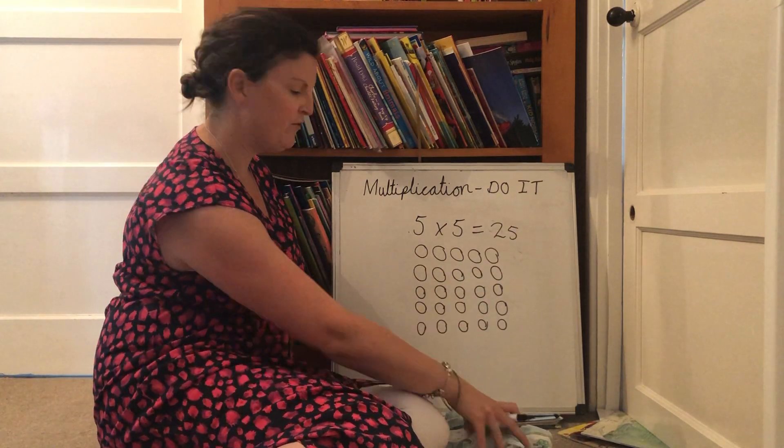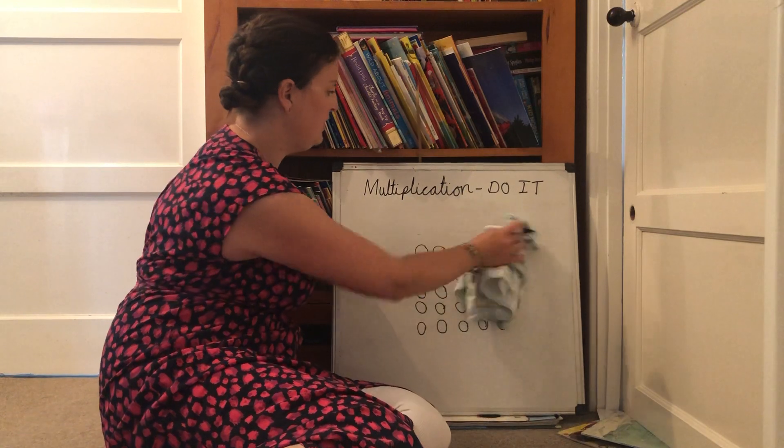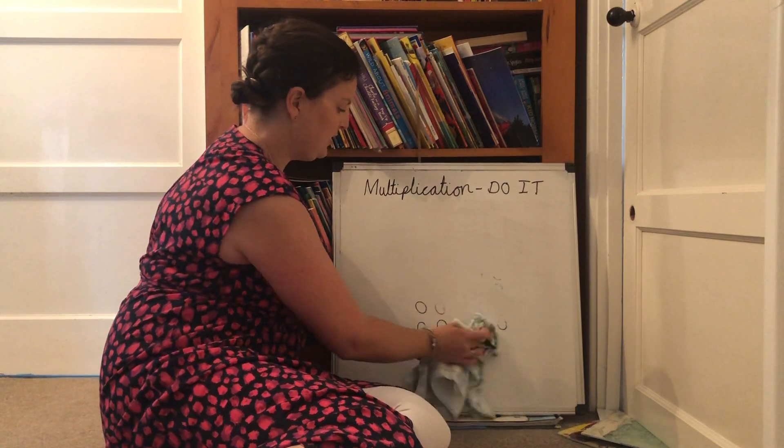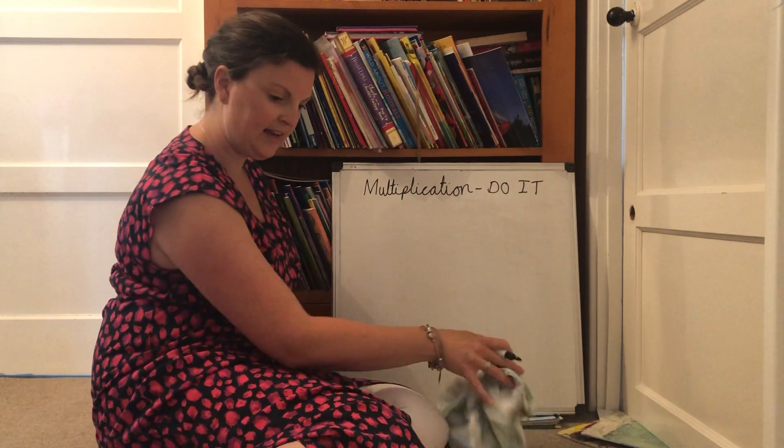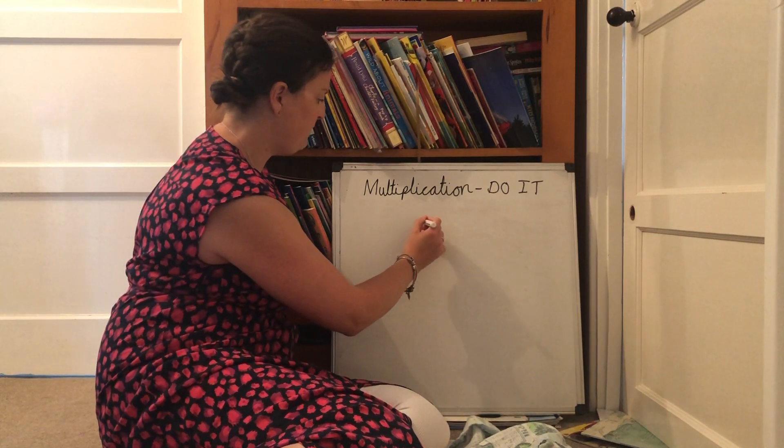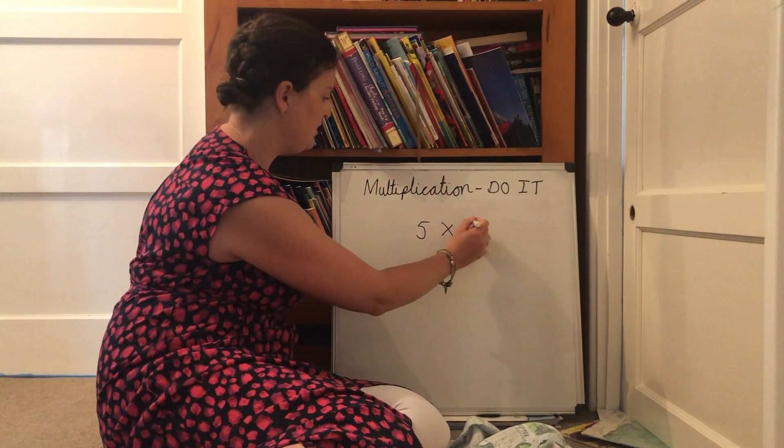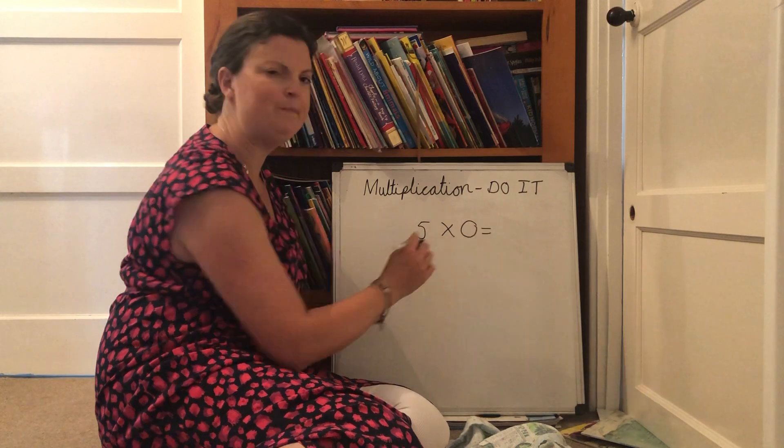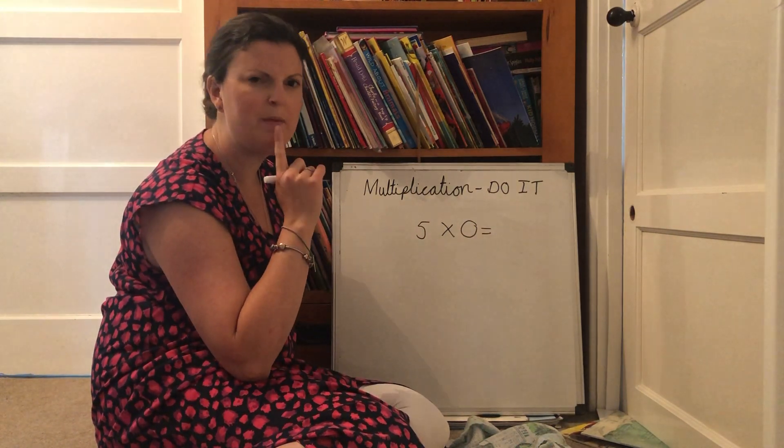Right. They're quite straightforward. I'm going to look at one now that's a little bit trickier. And it's this one here. Let's try five times zero. What do you think the answer could be to that?